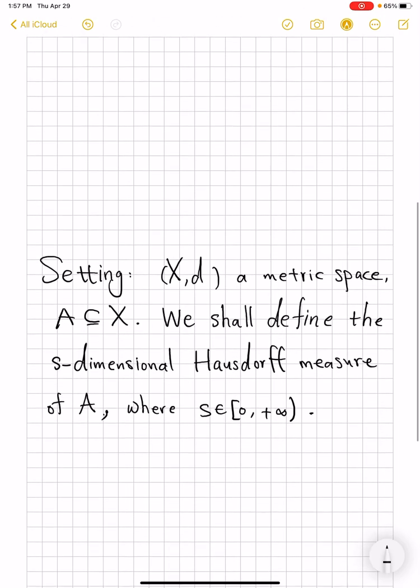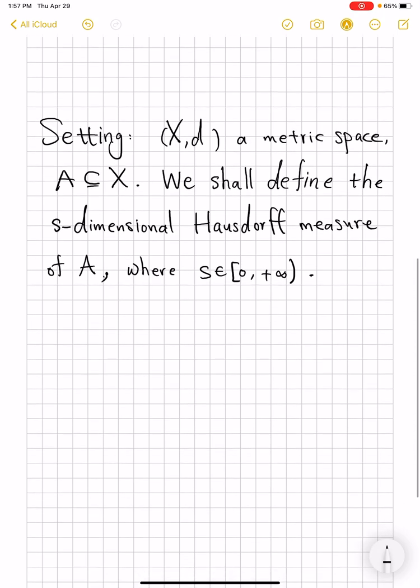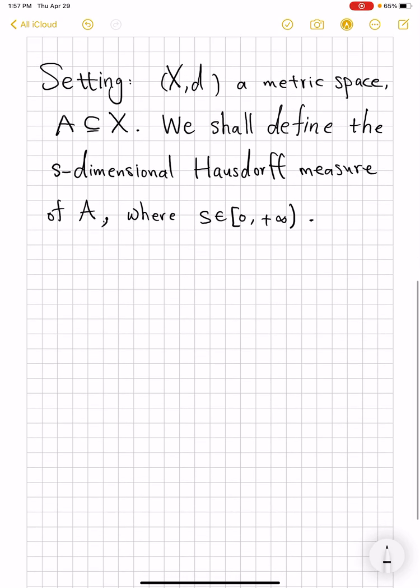Now we've been talking about Hausdorff measure using the example of one-dimensional objects in R2. Now it's time to define it in general metric spaces and for general subsets. So, let's fix our setting.